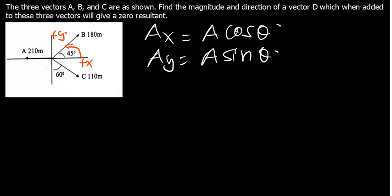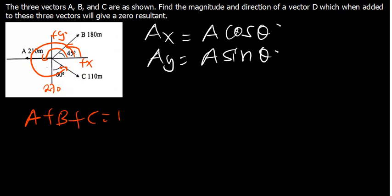So, in the case of vector B, we are going to use 45 degrees. In the case of vector A, the angle comes from the positive X axis all the way to the vector, which is 180 degrees — that is toward west. For vector C, we go from the positive X axis down to 270, then plus 60, giving 330 degrees. Vector D is the one we need to find. If we add A plus B plus C plus D, the resultant must be zero.